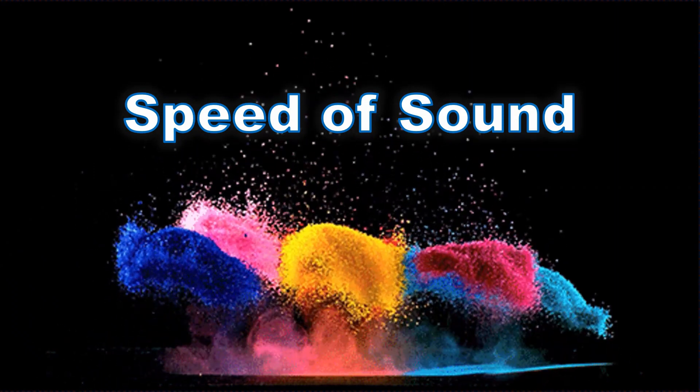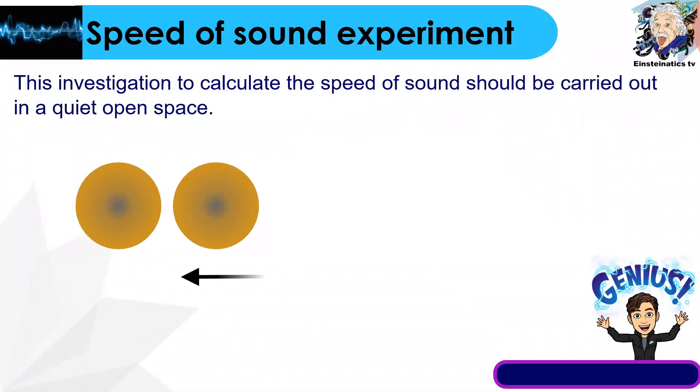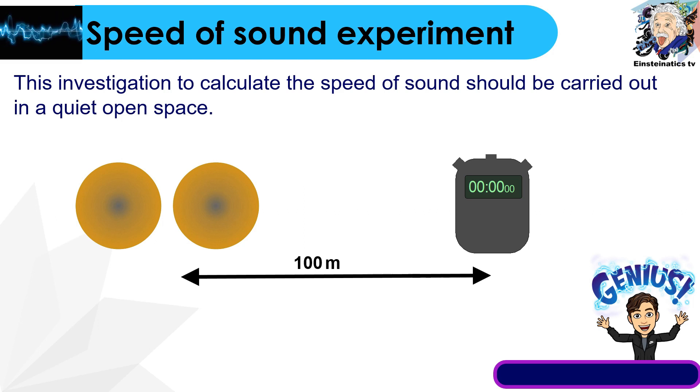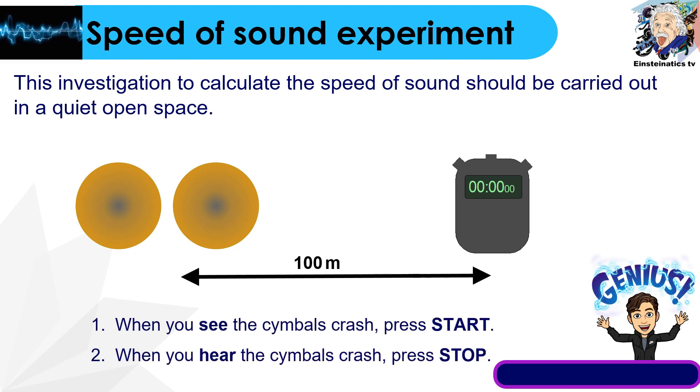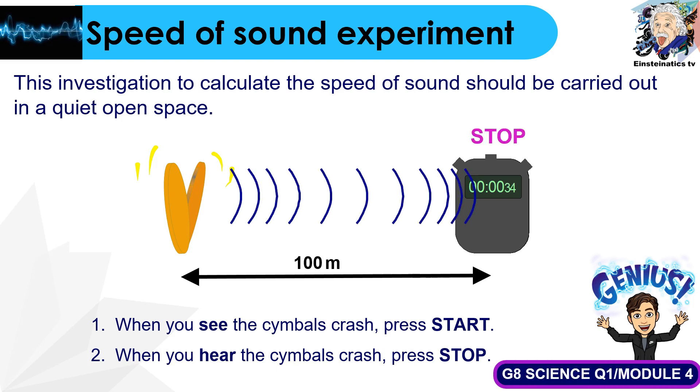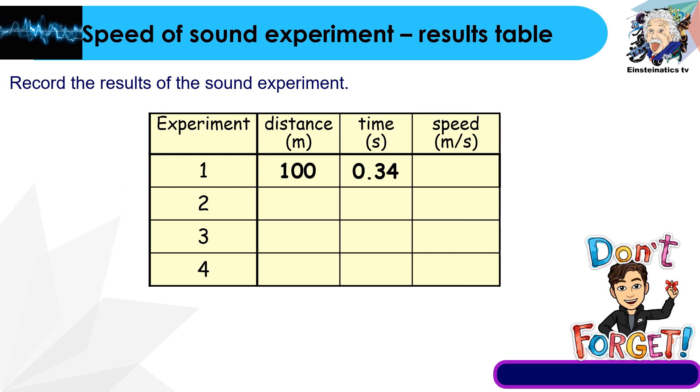This time, let's proceed to the speed of sound. When experimenting with the speed of sound, we can do this at home and carry out in a quiet open space. For this experiment, we will use a symbol. When you see the symbol crash, you press start on the timer. When you hear the sound, then you press stop. Measure the time it took for the sound to arrive.